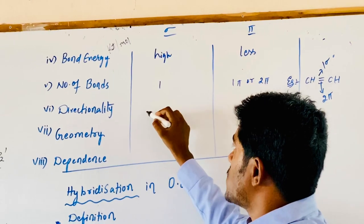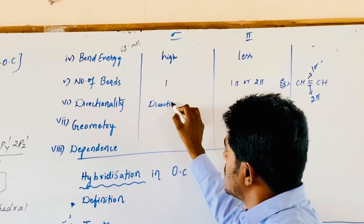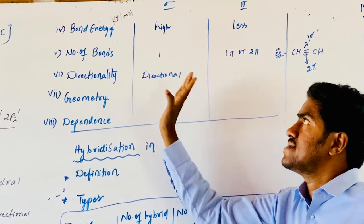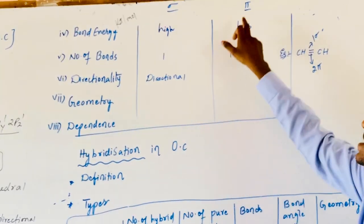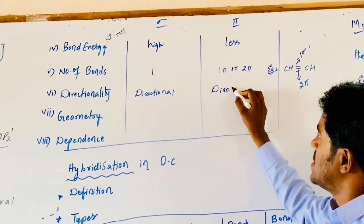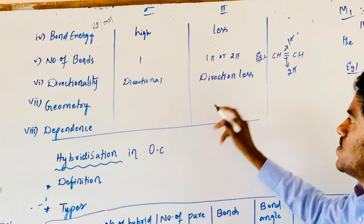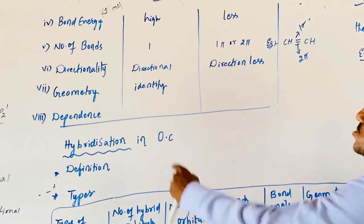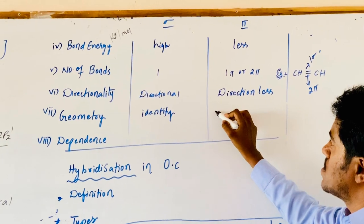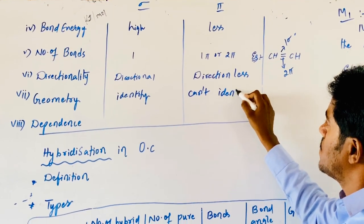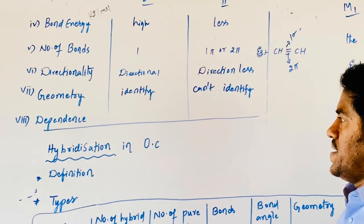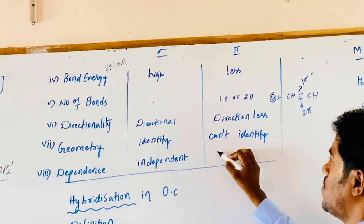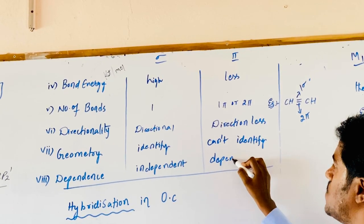Directionally, the sigma bond is directional along the coordinate axes — electron density concentrated on x, y, or z axis. Pi bond is directionless. Geometry can be identified with the help of sigma bond, but cannot be identified with pi bond. Sigma bond is independent, while pi bond always depends on sigma. The s-orbital always forms sigma bond; other orbitals can also form pi bonds.